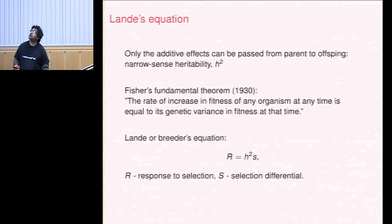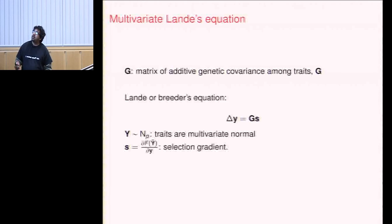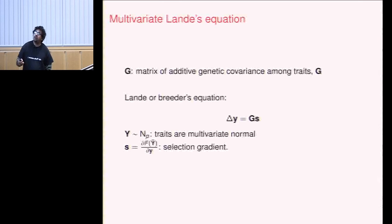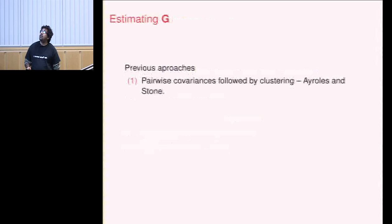In the multivariate version, if your traits are continuous and come from a normal covariance matrix, you get a similar equation where S is a selection gradient — a direction you're pushing in phenotype space. Delta Y is the change in response, mediated by the matrix G, which is the matrix of additive genetic covariance. If you push in a direction in the null space or orthogonal to G, you get no response. This is very important for breeders. The key problem is how to infer this G matrix given data.